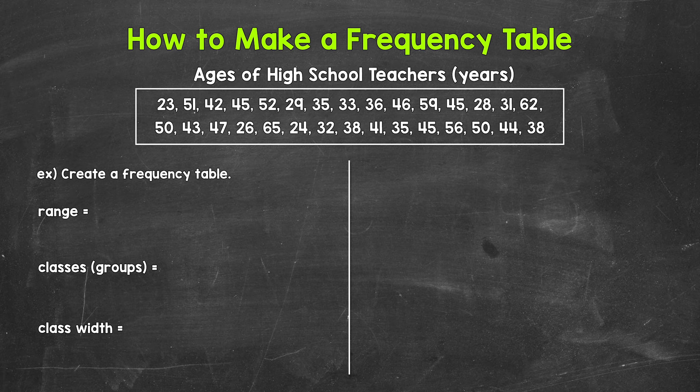So we have the ages of the teachers at a high school. Now the first thing that we need to do is find the range of the data. The range tells us how far our data spans, so how spread out the data is between the highest value and lowest value. Knowing the range will help us determine how we are going to approach making our table. It starts us off. All we need to do here is find our highest number in value and lowest number in value, then find the difference between them.